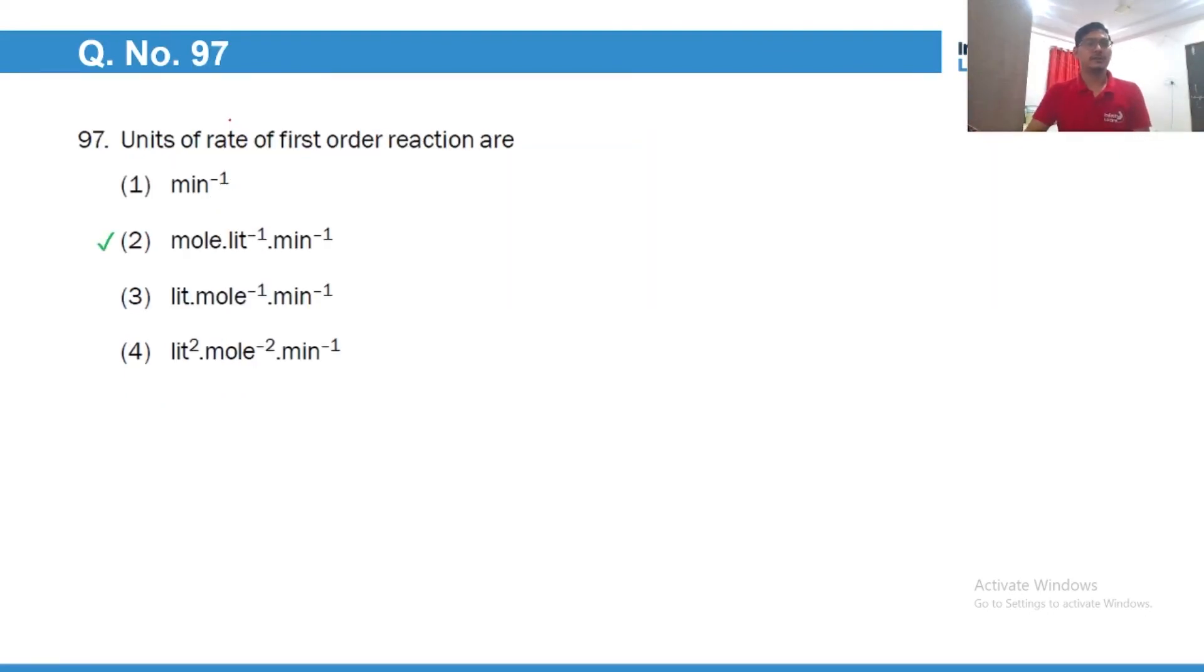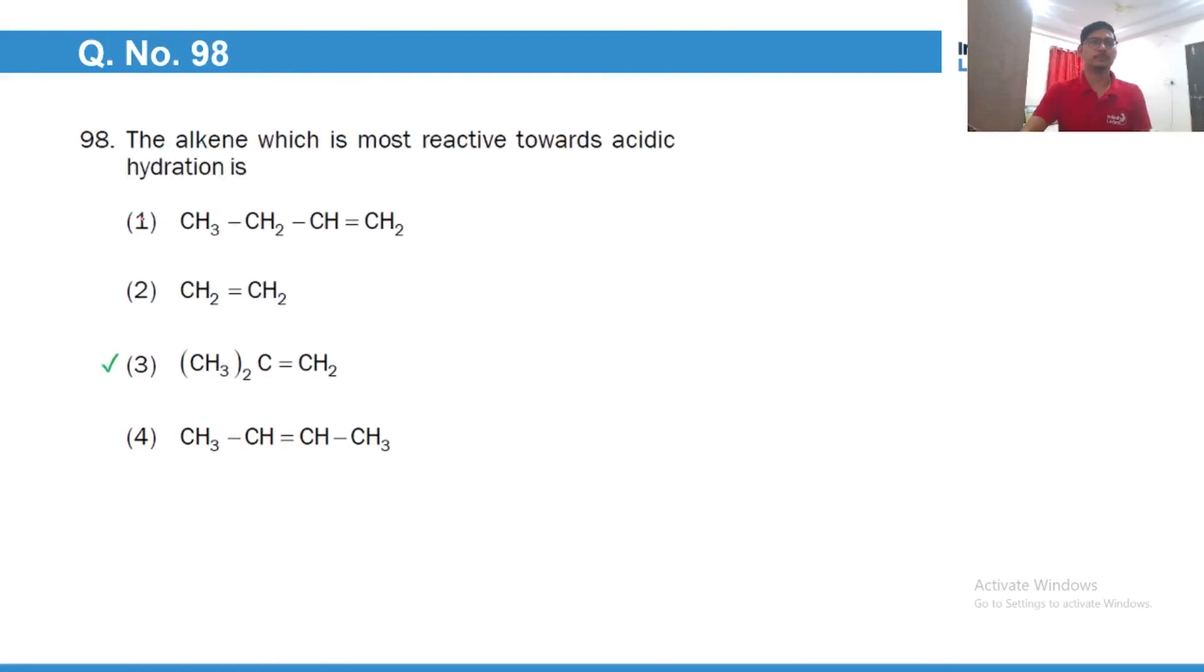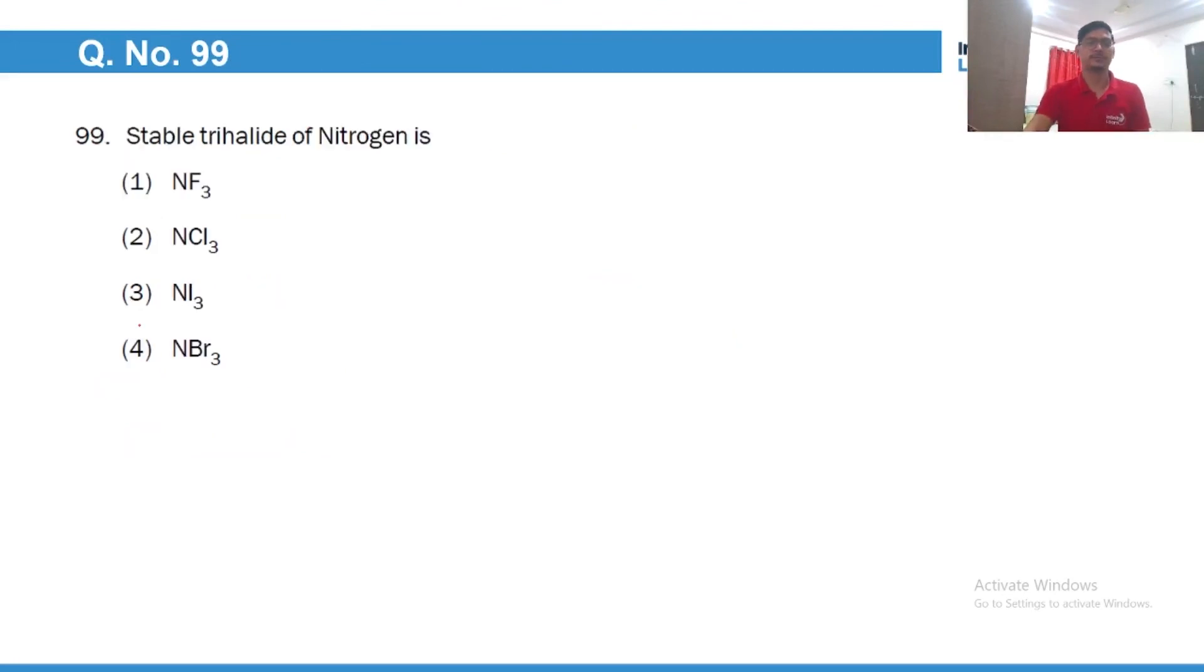The unit of rate of reaction remains constant irrespective of the order. So it will remain concentration by time which is mole per liter per minute. The alkene which is most reactive towards acidic hydration is the one which gives most stable carbocation. So this is the most stable carbocation, tertiary. So this alkene would be the most reactive. Stable trihalide of nitrogen is NF3 because of the strong nitrogen fluorine bond. NCl3 is explosive weak NCl bond, NI3 and NBr3 they don't exist in pure state.